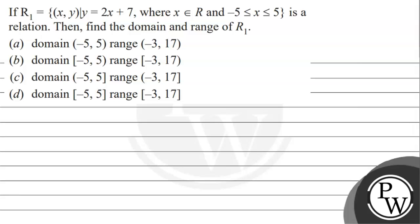Hello, let's read the question. The question says that r1 is equal to (2x, y) such that y is equal to 2x plus 7, where x belongs to real numbers and minus 5 is less than or equal to x, less than or equal to 5, is a relation. Find the domain and range of r1.